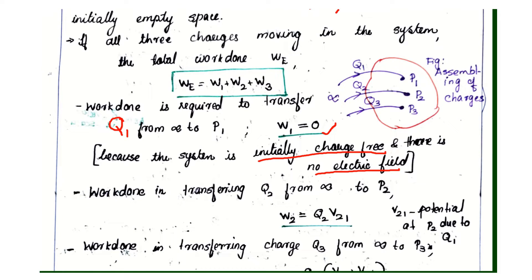Consider the second case: work done in transferring Q2 from infinity to point P2. In the system, the work done W2 is equal to Q2 multiplied by V21, where V21 is the potential at P2 due to Q1.